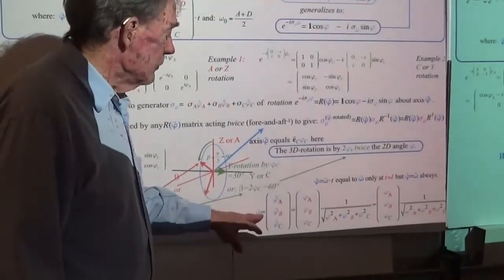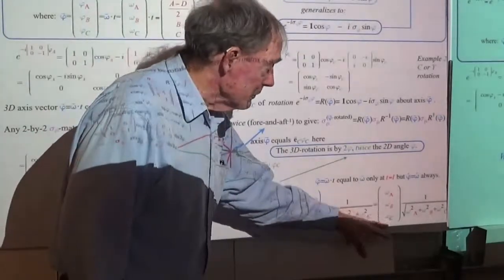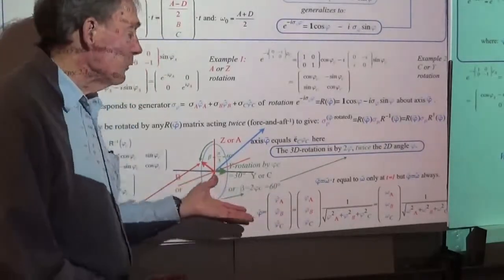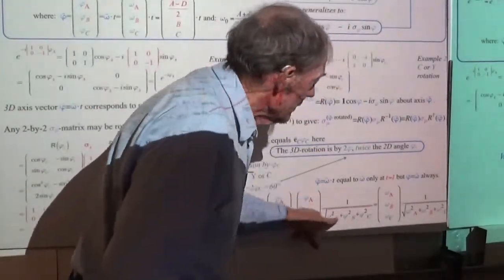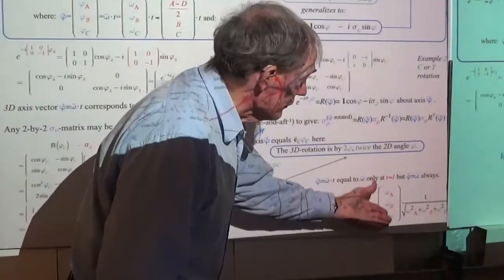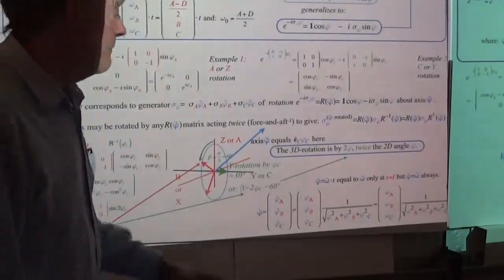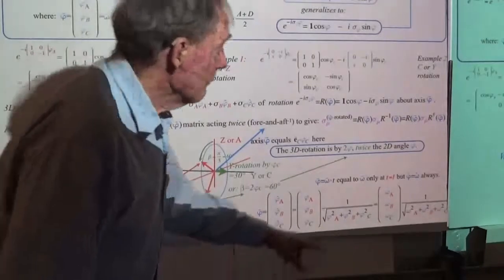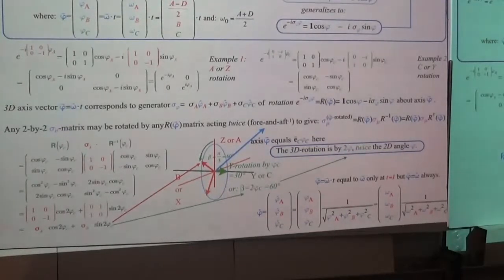We end up, when phi-C equals 30 degrees, with a rotation of 60 degrees here — twice what you might have expected. The actual phi is 30, but we end up multiplying by an Euler angle beta that is two times 30 degrees, 60 degrees. Very important: when you're in the 3D ABC real vector space, things go twice as much. Vice versa, in the spinner world it's half as fast as what's going on in your vector world.